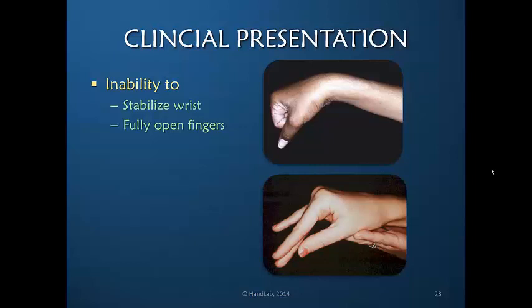The only metacarpophalangeal joint extensor power comes from the extrinsic extensors — the extensor digitorum communis. Therefore, if you ask the patient to extend, they will only be able to extend the interphalangeal joints. Here the patient is supporting her own wrist, but even with the wrist support, this is still the maximum finger extension achievable.